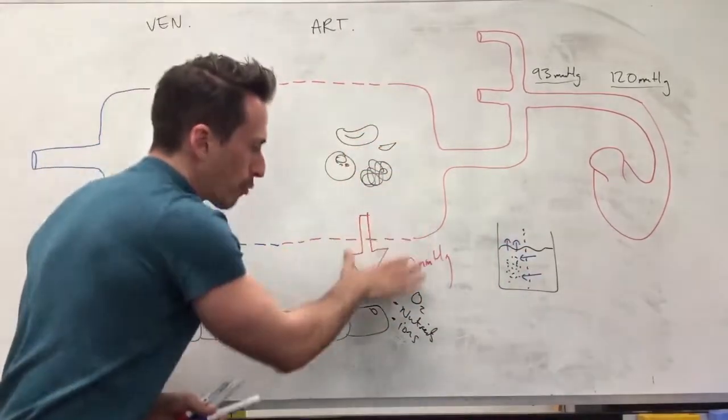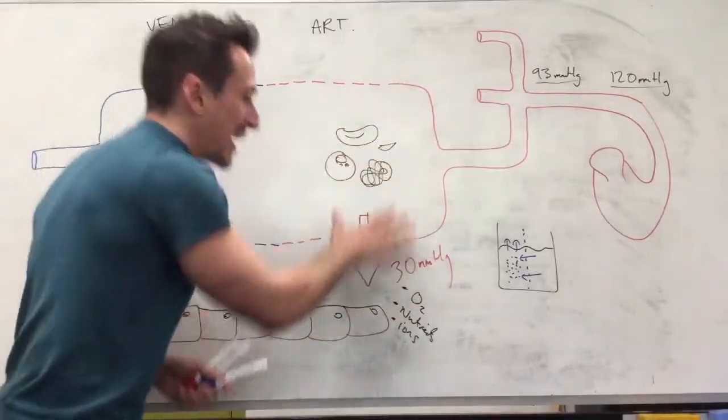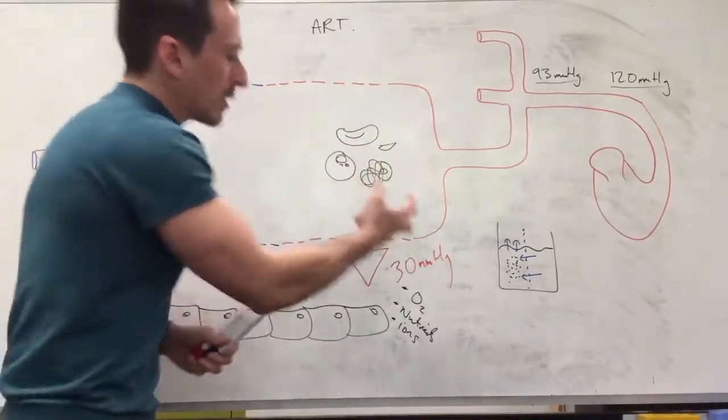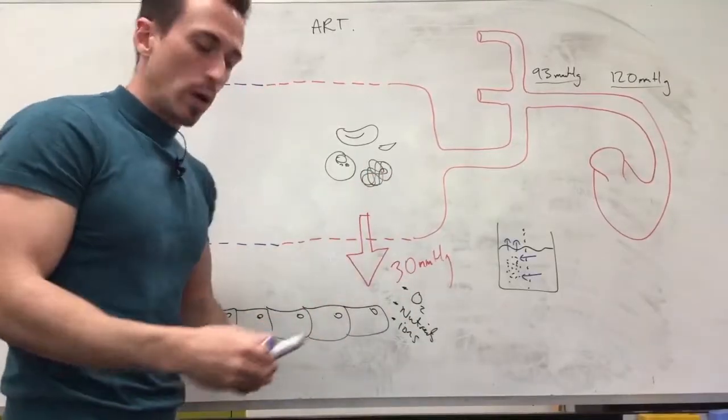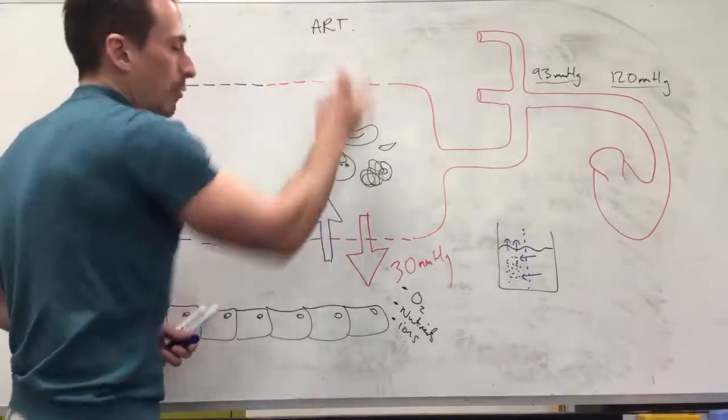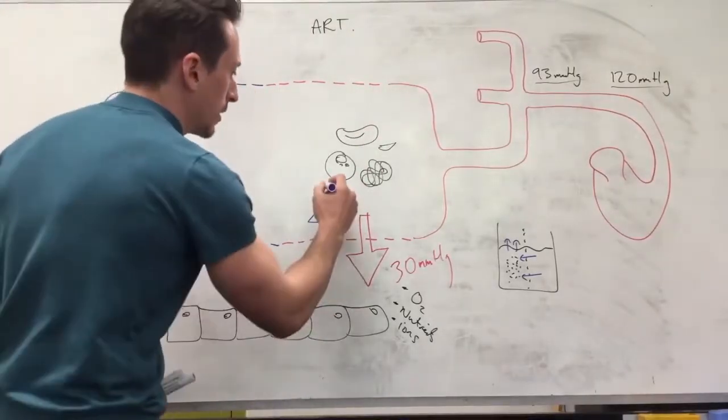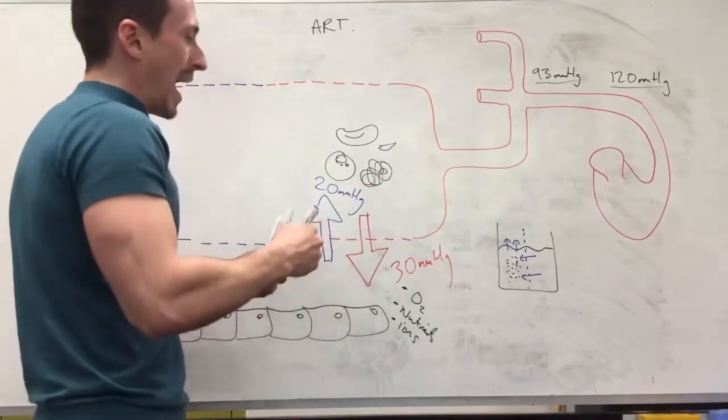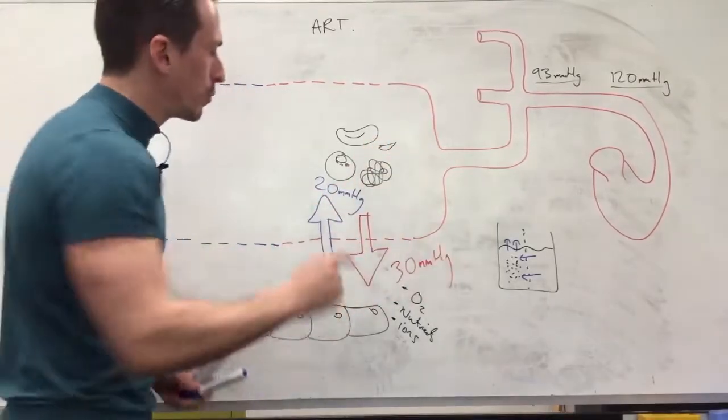Now think about this: as the fluids being pushed out under pressure, capillary pressure, hydrostatic pressure is the term we use, there's stuff left in here and there's going to be an inward pull as well. And this inward pull at the arterial end is 20 millimeters of mercury, or roundabout. It does vary.